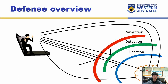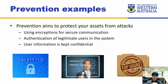Let's look at some prevention examples first, as this forms our first layer of defense. It aims to protect your assets from attacks — directly mitigating and kicking out any attackers trying to gain access. Examples include using encryption for secure communication, authentication of legitimate users, and keeping user information confidential. All of those are prevention examples which should be implemented so that when attackers try to exploit, the system is already well protected.